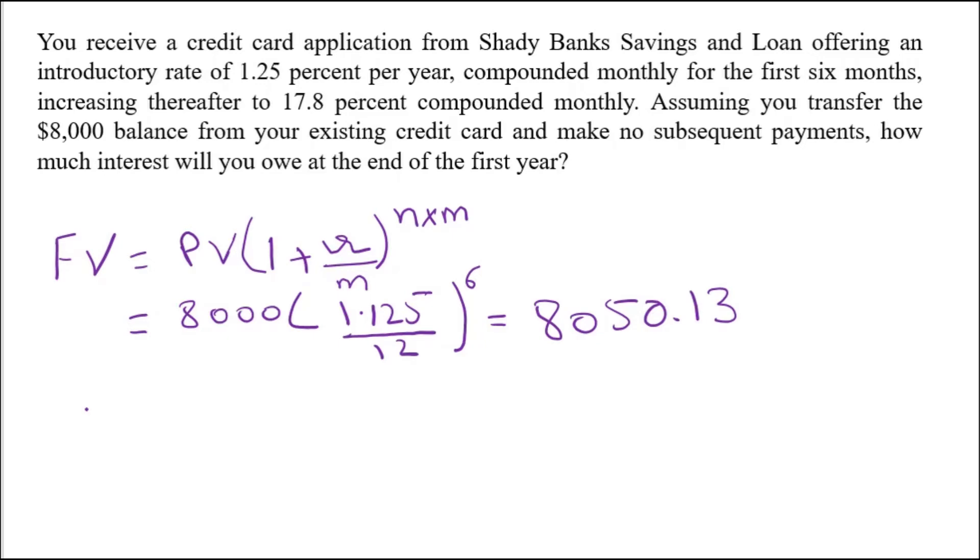We will again compound this amount by 17.8% and interest will be again paid monthly. So again we will calculate future value, but in this case our present value will be $8,050.13, 1.178 divided by 12 and raised to power 6.